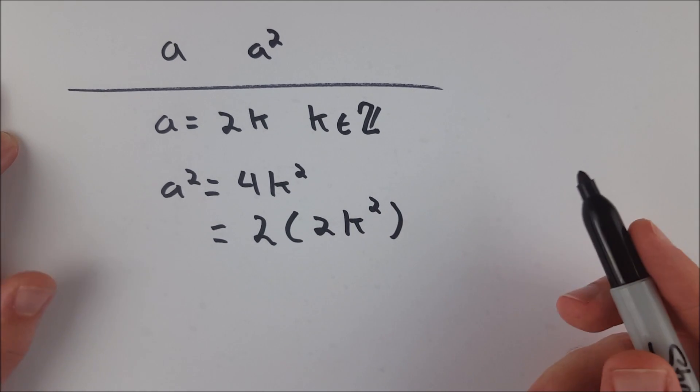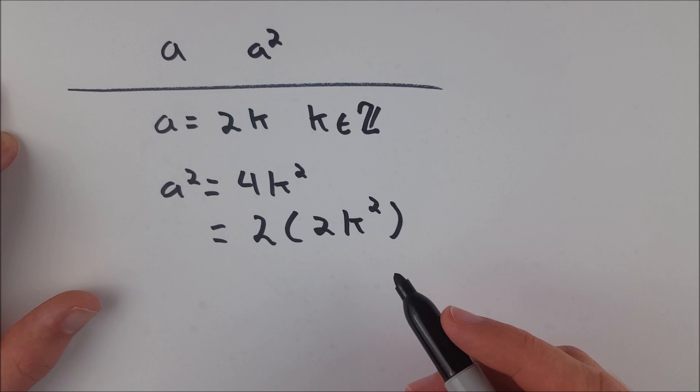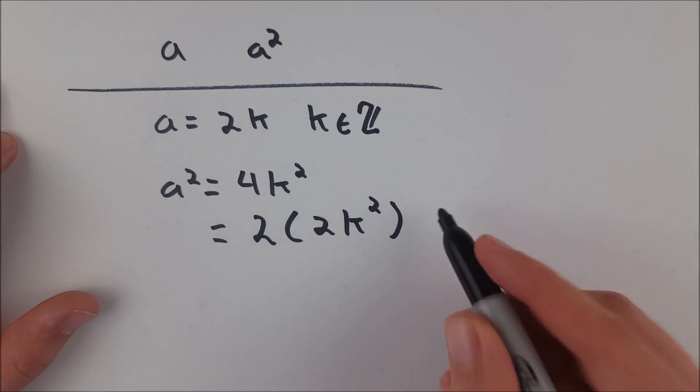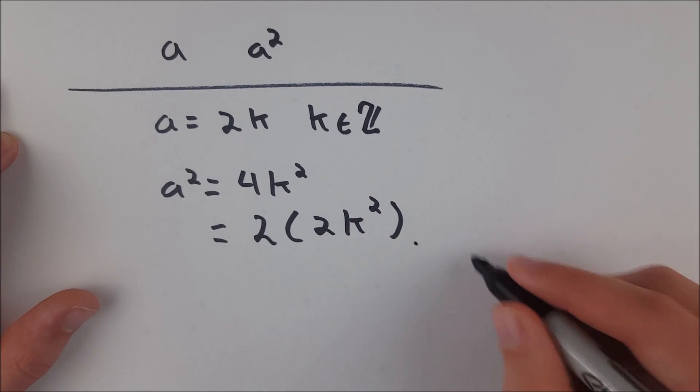And then by closure of the integers, 2k squared is an integer. So therefore a squared has to be an even number. And that's really all there is to it.